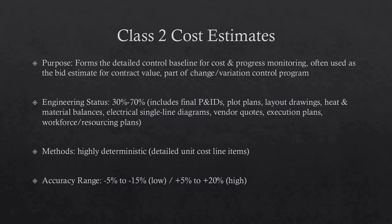Class 2 estimates are typically prepared as the detailed control baseline against which all actual costs and resources will be monitored for variations to the budget. They also form a key part of the change and variation control program. Class 2 estimates always involve a high degree of deterministic estimating methods and are prepared in great detail, often including tens of thousands of unit cost line items. Typical accuracy ranges are minus 5% to minus 15% on the low side and plus 5% to plus 20% on the high side. Ranges could exceed these values in unusual circumstances.